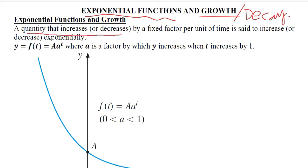A quantity that increases or decreases, that is the decay, by a fixed factor per unit of time is said to increase or decrease exponentially. So it is a fixed factor per unit of time that is happening. It is an increase or it is a decrease.